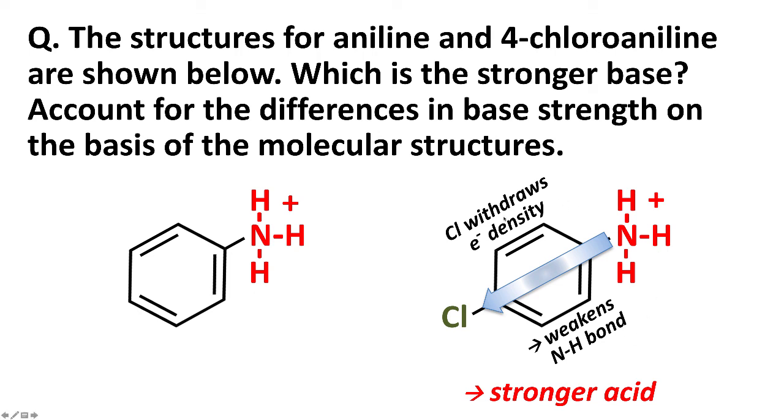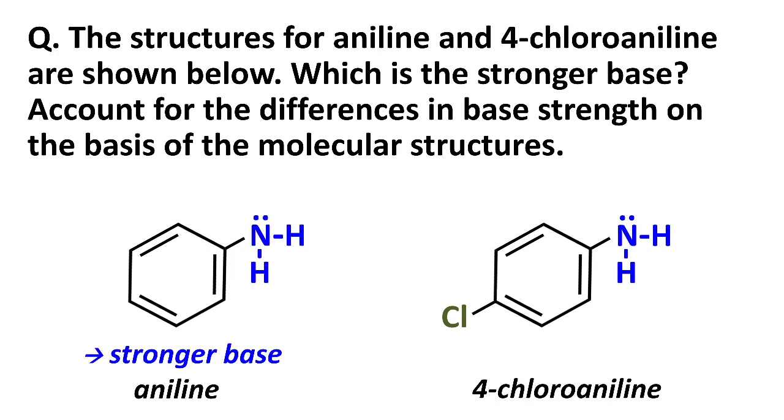Now, of course, if the conjugate acid form is stronger, then its conjugate base is weaker. If the conjugate acid is weaker, then its base form is stronger. And so aniline being the or having the weaker conjugate acid means that aniline itself is the stronger base.